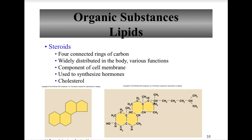Steroids consist of four interconnected carbon rings. An example of a steroid is cholesterol. Their functions include composing cell membranes and serving as chemical messengers and hormones. You can compare and contrast triglycerides, phospholipids, and steroids in table 2.7 on page 73 of the textbook.